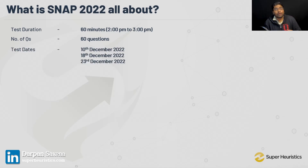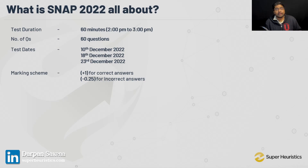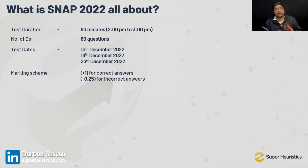Further, the SNAP exam will happen three times. There will be three slots in which you can attempt the exam, meaning you can attempt it three times within the same year and give yourself three chances. Now, the marking scheme is plus one for the correct answer, whereas minus 0.25 for the incorrect answers.